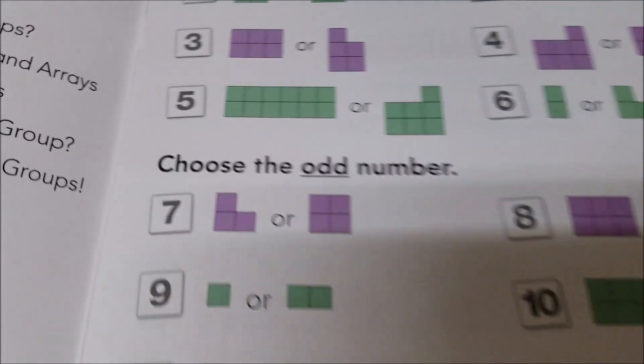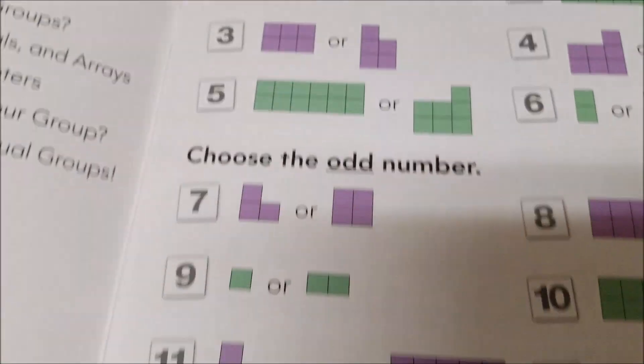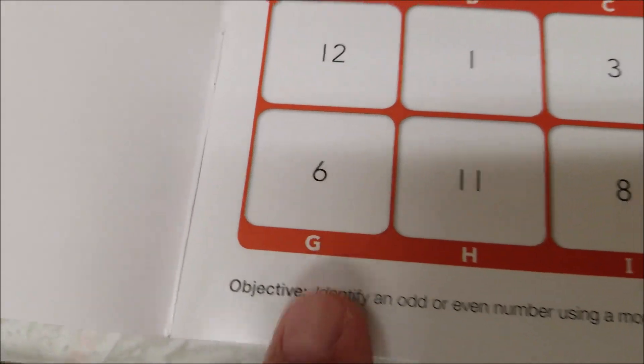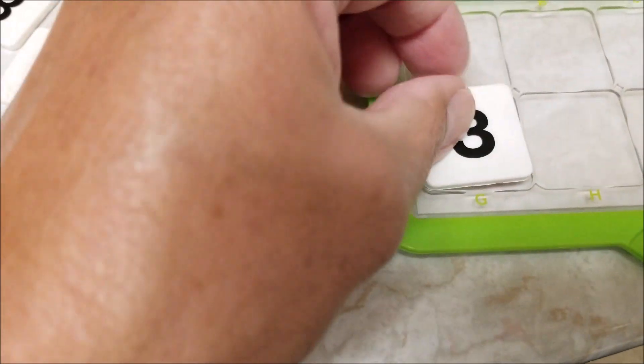The third one is going to be two, four, six, and six is going to be G. So I'm going to put that right there.